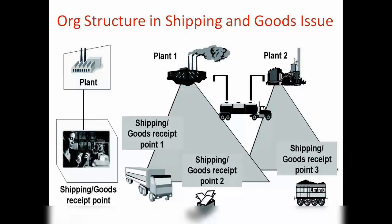Plant 1, Plant 2 — under Plant 1 we have Shipping Point 1 and Shipping Point 2, and under Plant 2 we have Shipping Point 3. A shipping point can be a goods receiving point, a goods issue point, or it could be both. From the same shipping point you can send and receive goods, or you can create different ones — Shipping Point 1 for goods issue and Shipping Point 2 for goods received.